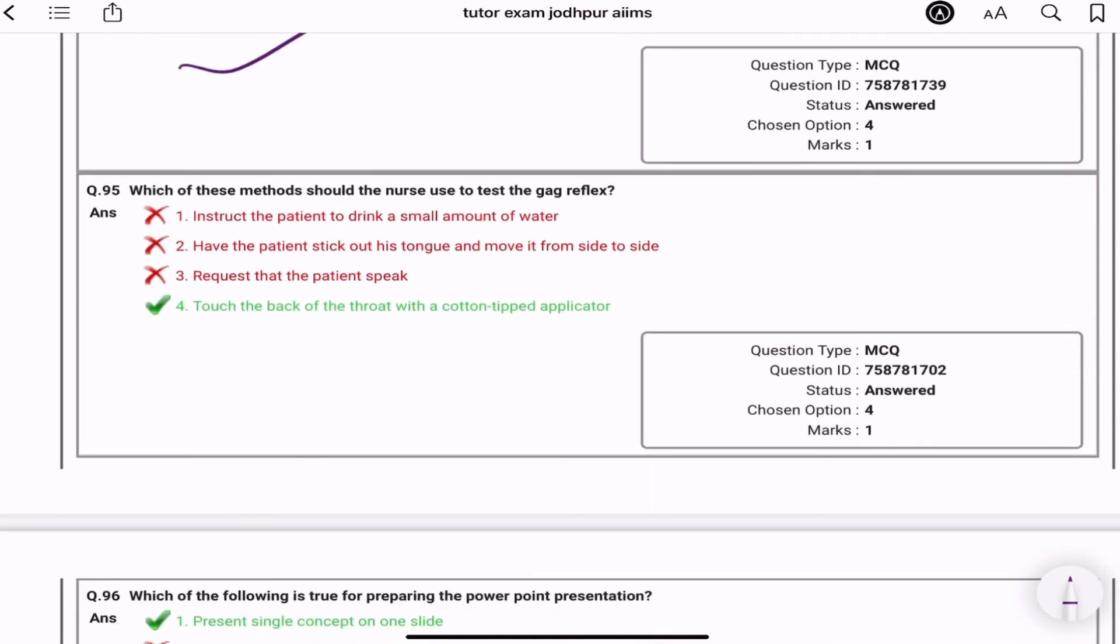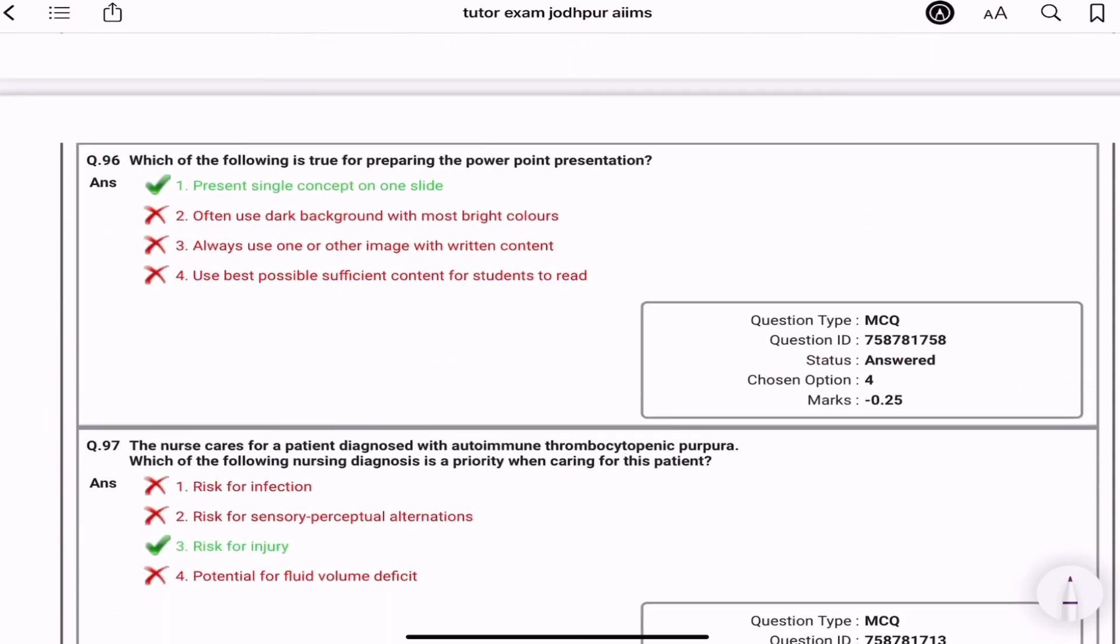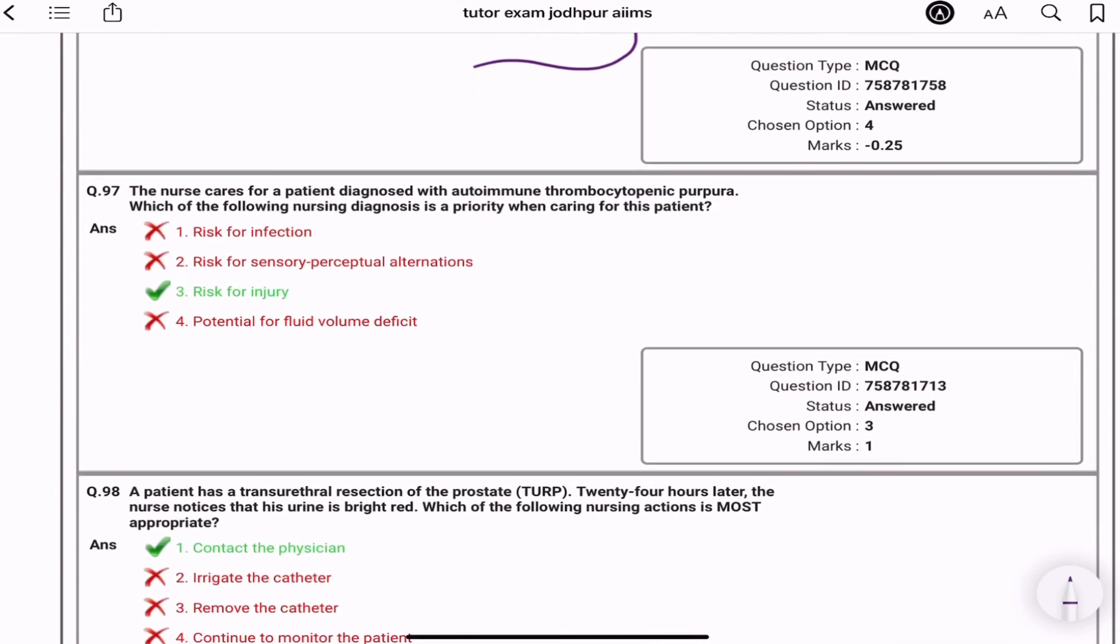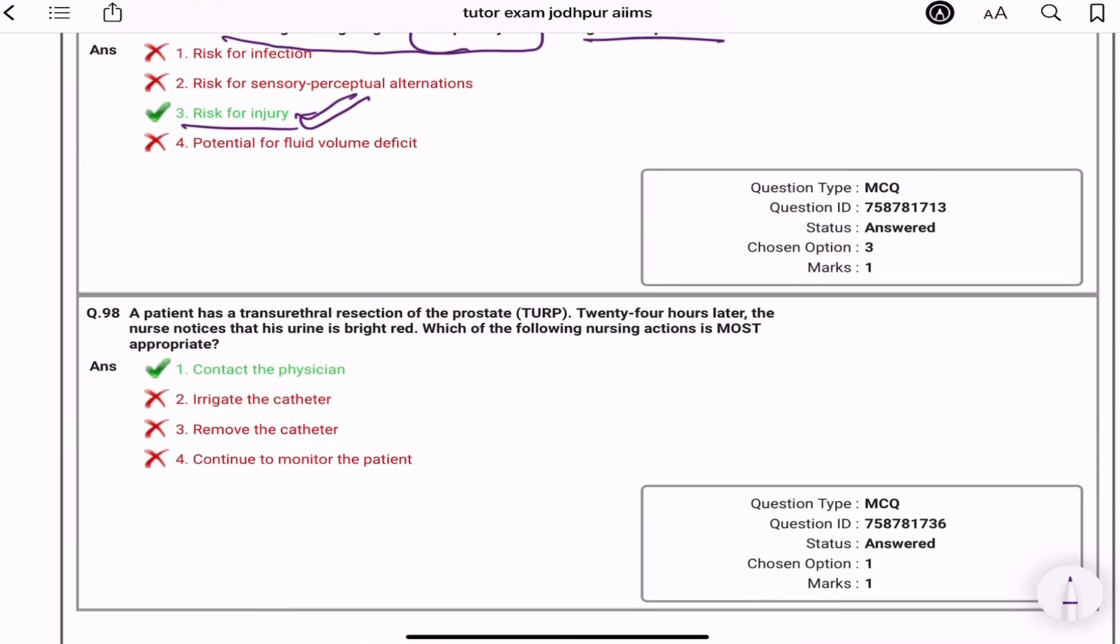Which of the following method should the nurse use to test the gag reflex? Touch back of the throat with a cotton tipped applicator. Which of the following is true for preparing the PowerPoint presentation? Present the single concept on one slide. The nurse care for a patient diagnosed with the autoimmune thrombocytopenic purpura. Which of the following nursing diagnosis is a priority when caring for this patient? Risk for injury. A patient has transurethral resection. The nurse notices his urine is bright red. Which of the following is appropriate? Contact the physician. Bright red blood and active bleeding.